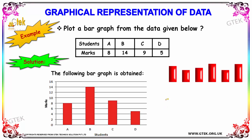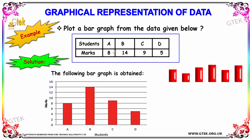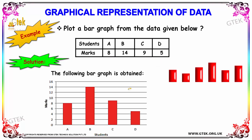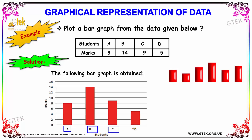Let's go with an example of how to plot a bar graph from the given data. We have students A, B, C, and D having the marks 8, 14, 9, and 5. The students are represented on the x-axis as A, B, C, and D, and these are the marks which they obtained.